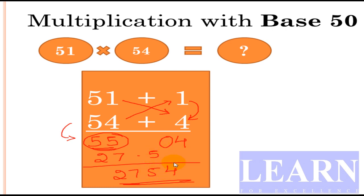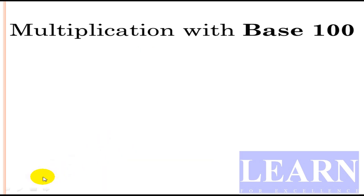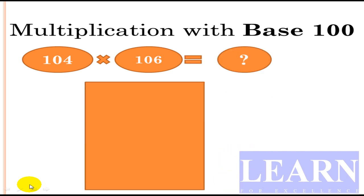We'll look at the next trick: multiplication with base 100. Now we'll take two numbers, 104 and 106. We'll write 104 and 106 in the same deviation format. 104 is 4 more than 100, 106 is 6 more than 100.